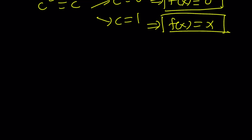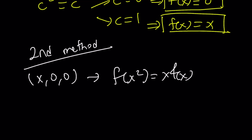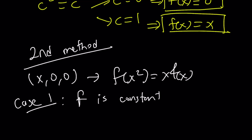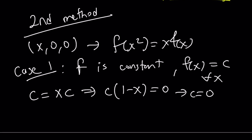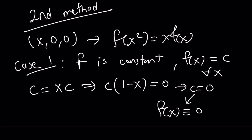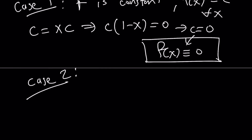Now let's talk about the second method. We start again with (x, 0, 0), which gives us f of x squared equals x times f of x. We consider two cases. Case one: what if f is a constant function? If f of x equals c for all x, then the left-hand side is c and the right-hand side is x times c, giving c times (1 minus x) equals 0. Since x can be anything, c must equal 0. So f of x equals 0 for all x.